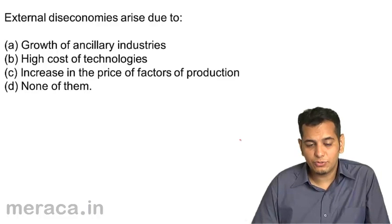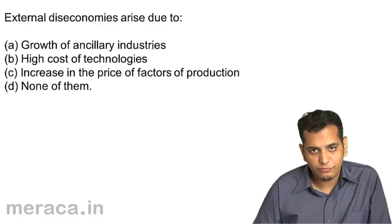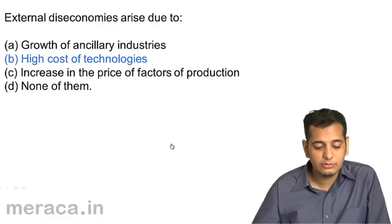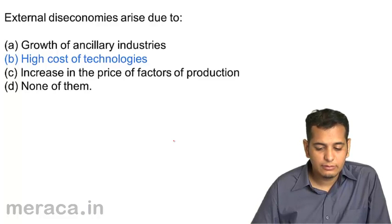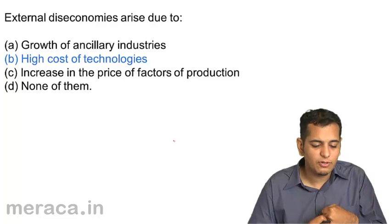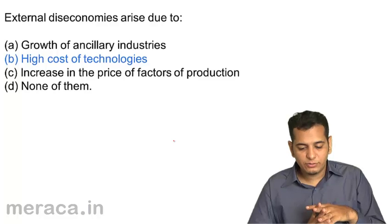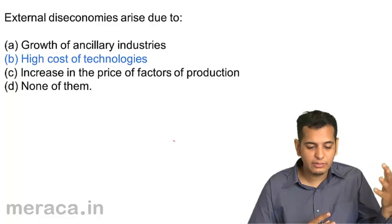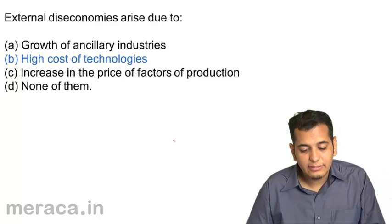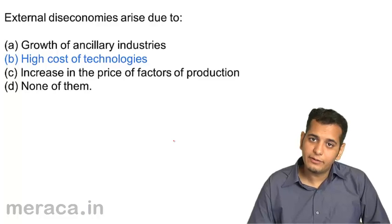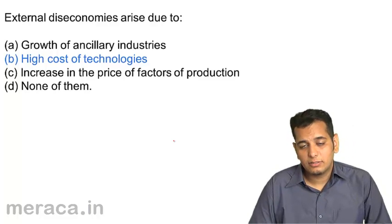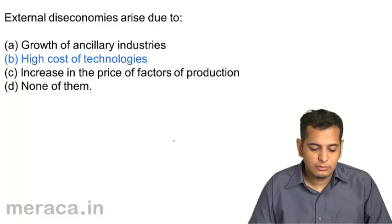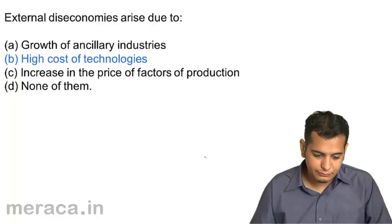External diseconomies arise due to: a) growth of ancillary industries, b) high cost of technologies, c) increase in the price of factors of production, d) none of them. The answer is high cost of technologies. We can derive diseconomies from all of these — when factors of production price increases, when cost of technology increases, or when growth of ancillary industries happens — but the better choice here is high cost of technologies.